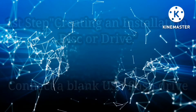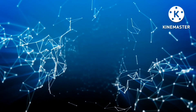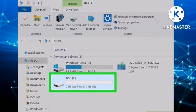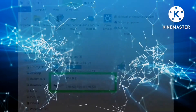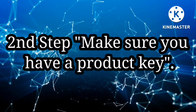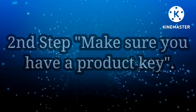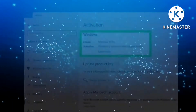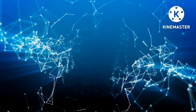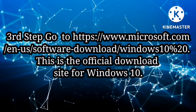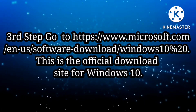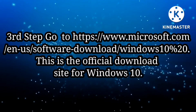The first tip is to create an installation disk or drive, so connect a blank USB flash drive as shown in the video. Second is to have a product key. Third is to go to the official download site for Windows 10.